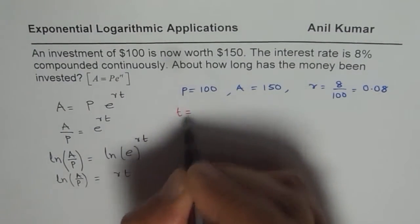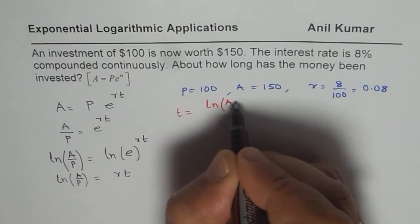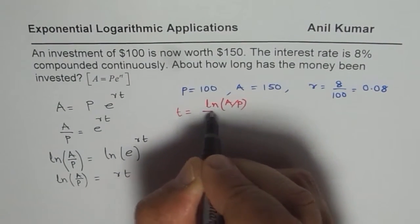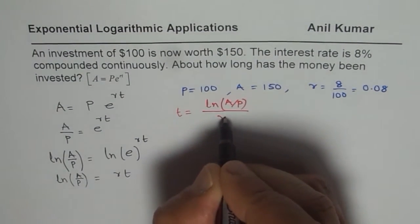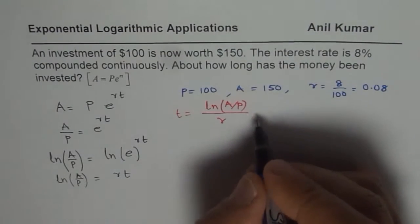Let me write down T equals ln A divided by P, over R. So that should give you the answer. So let's do this calculation and find our answer.